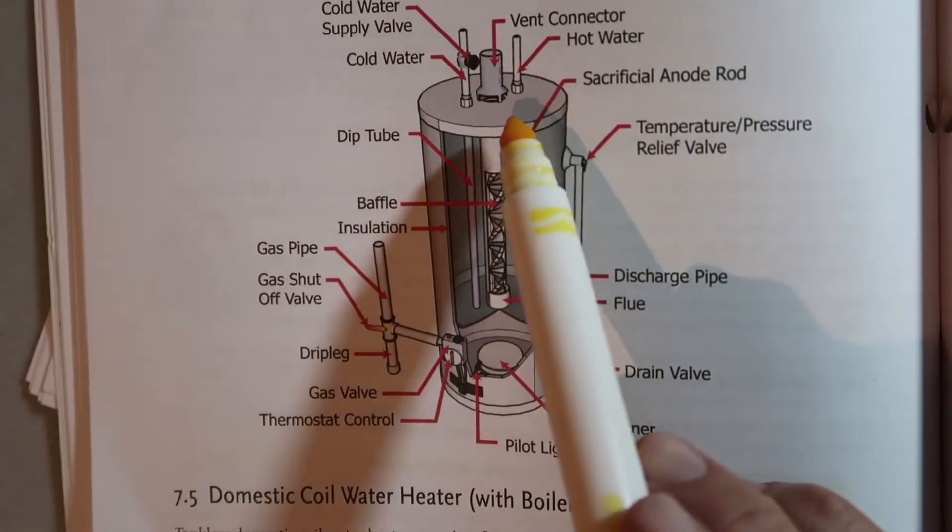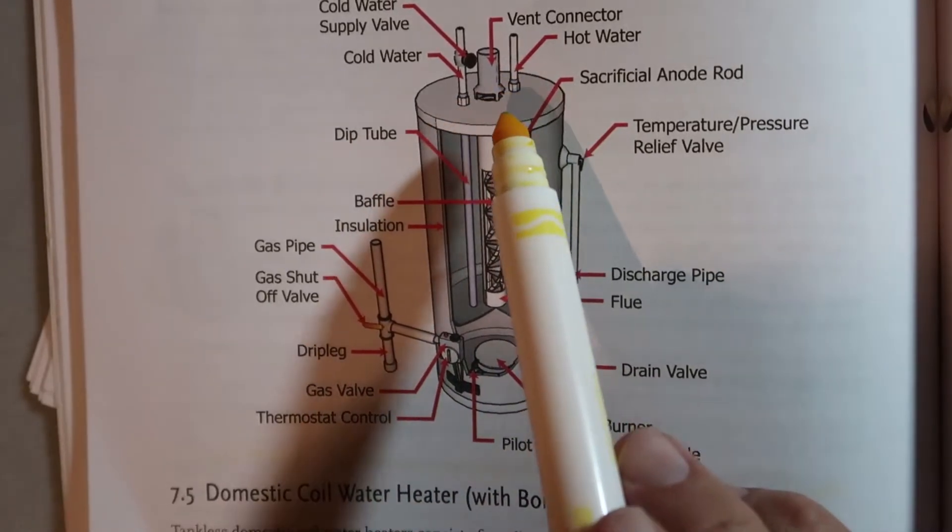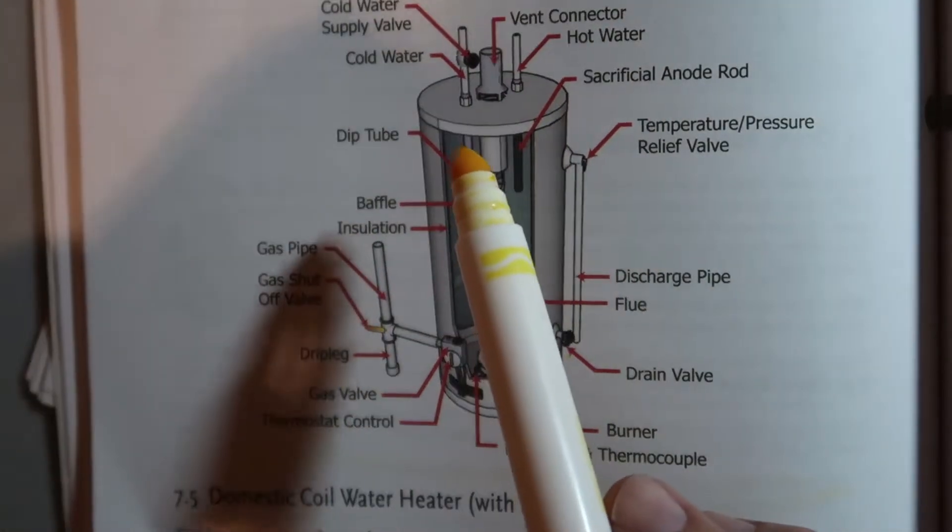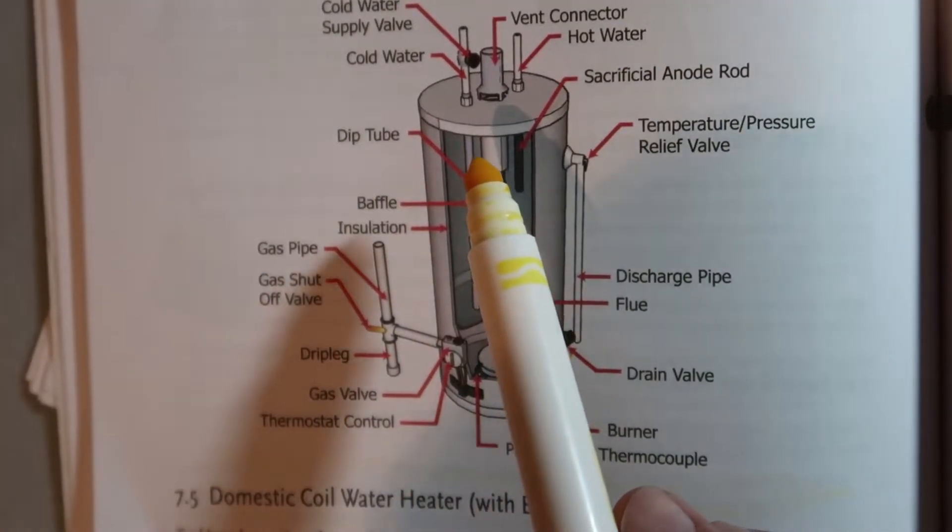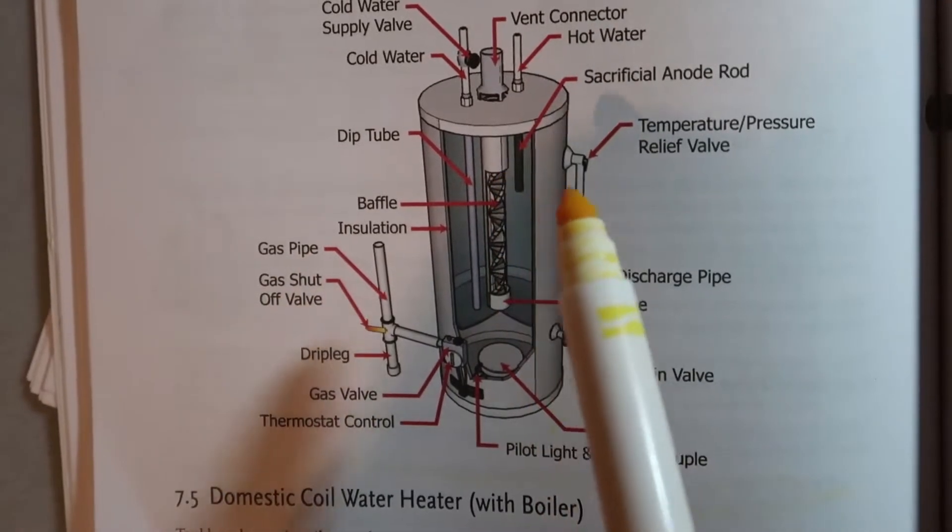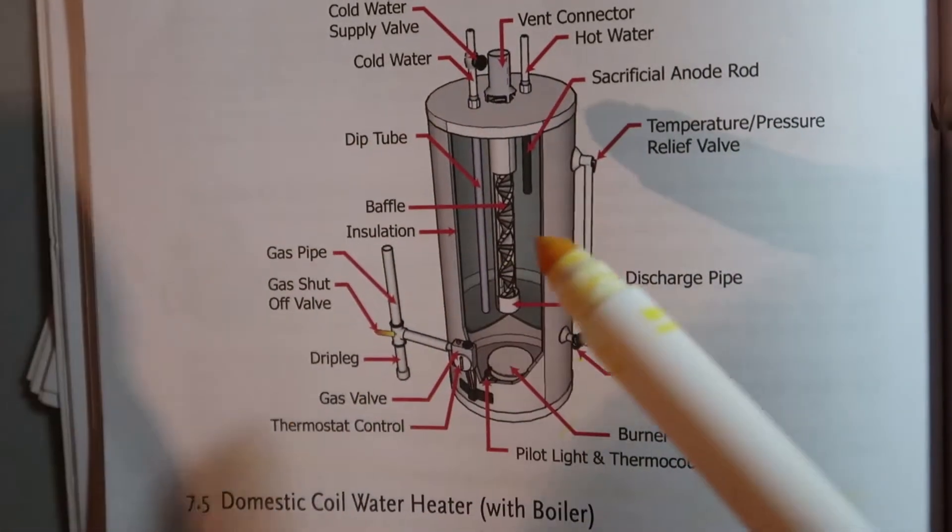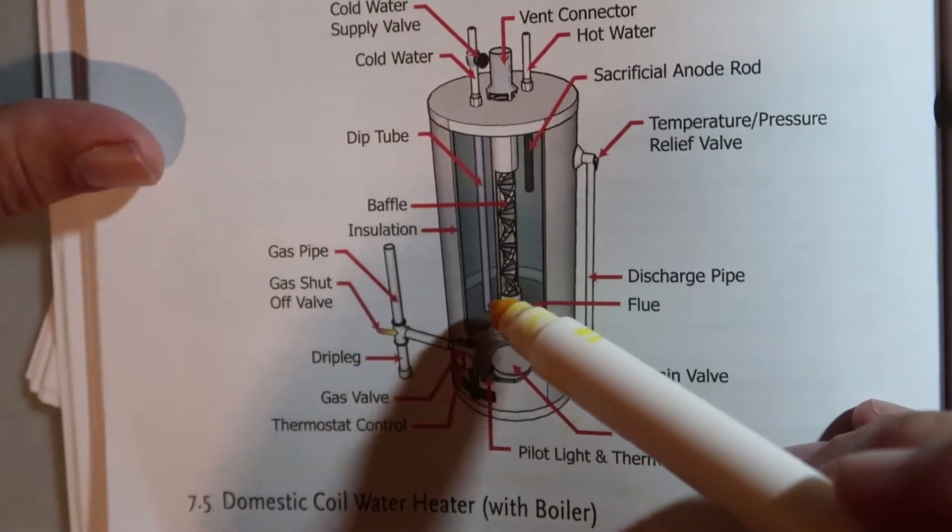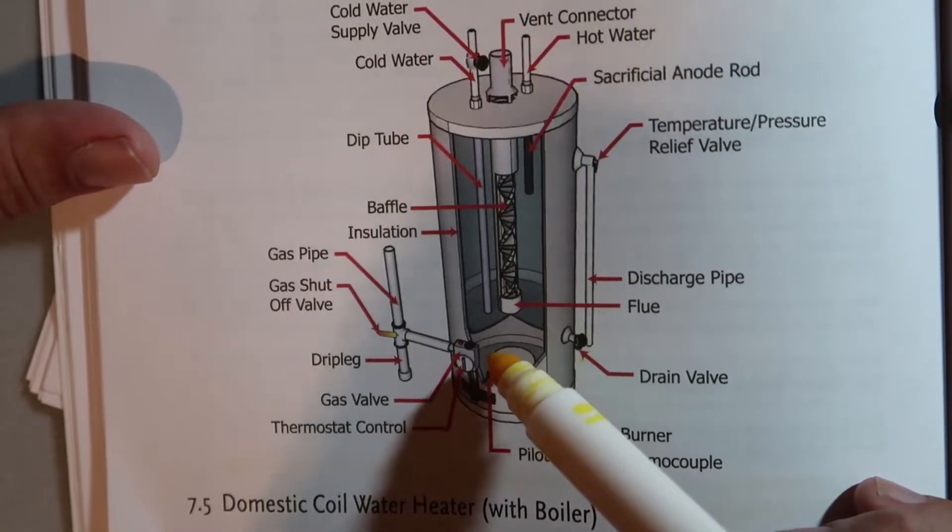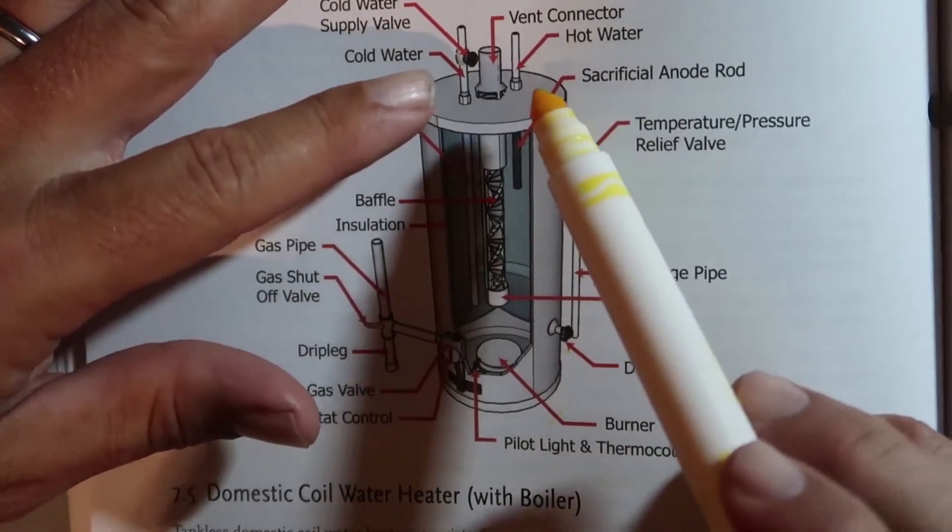You're going to look for any corrosion here, look for any deposits or soot around the draft hood or the vent connector, so that something may not be venting quite as well or there could be some back drafting there or something restricting the flue. That's a telltale sign. And you obviously have your cold water coming in where this tube goes all the way in, because you want the cold water down at the bottom of the water heater because as it warms up the warmer water is going to rise.